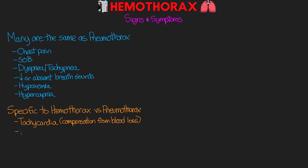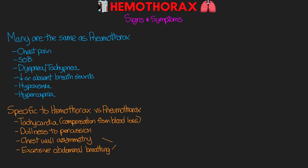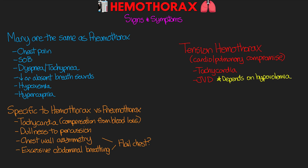For these patients we're also going to have a dullness to percussion because we're starting to fill up with fluid. We can see a little bit more chest wall asymmetry or excessive abdominal breathing, which could be the result of a flail chest injury. In cases of tension hemothorax, the signs and symptoms are similar to tension pneumothorax as they're really the result of cardiopulmonary compromise. Again that tachycardia, and JVD may or may not be present depending on the extent of hypovolemia the patient is experiencing from blood loss.